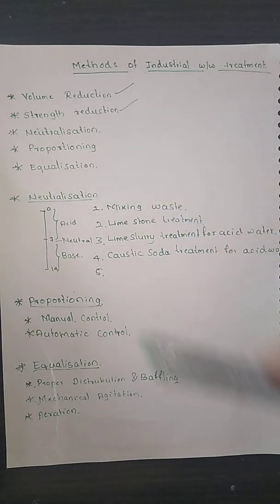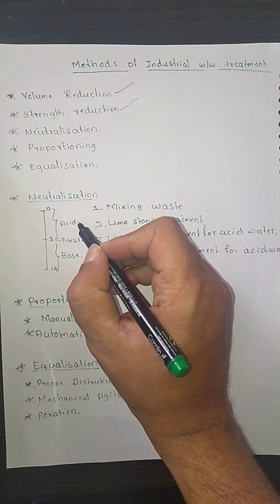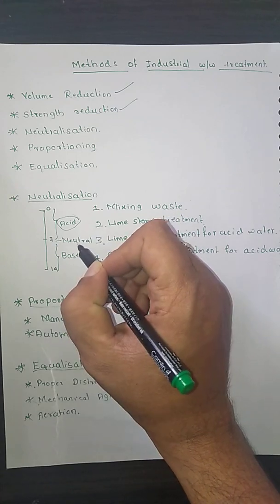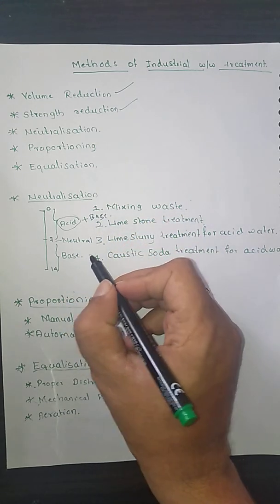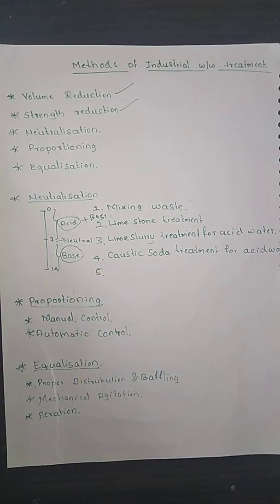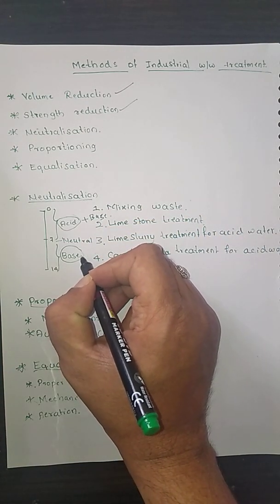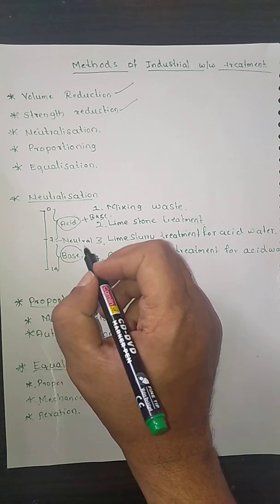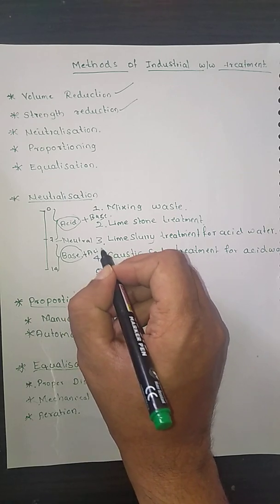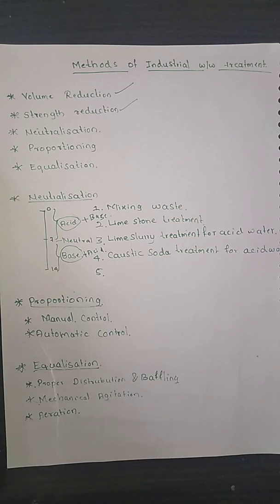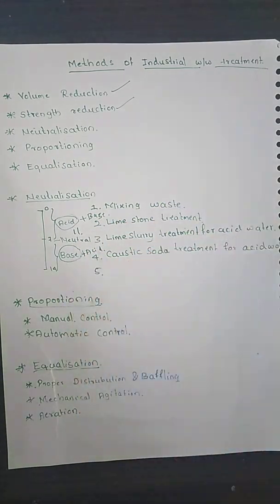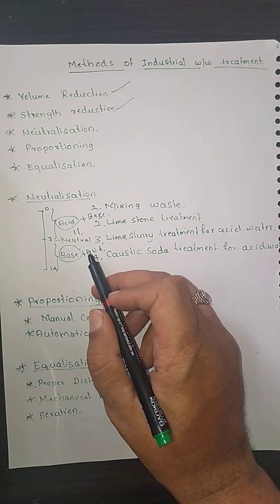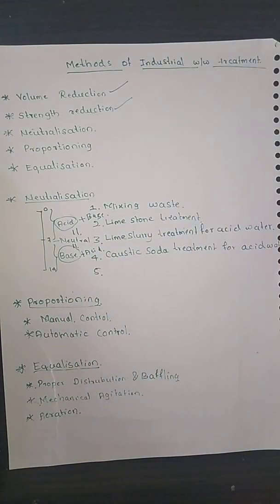How can we treat industrial wastewater by the neutralization method? If the industrial wastewater is acidic, we neutralize it by adding base, bringing the pH to the neutral stage. If the industrial wastewater is alkaline in nature, we reduce the basicity by adding acids. So overall, we add base to acidic waste and acid to basic waste to bring it to a neutral state.